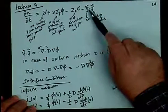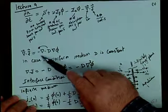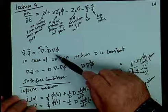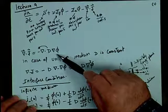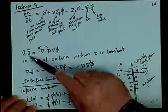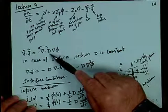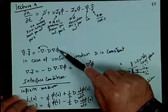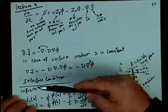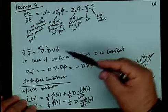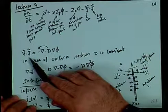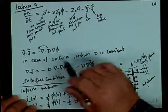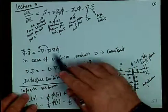Once we substitute with divergence J equal to negative divergence of D grad phi, in this case we will call it the diffusion equation. Why? Because J can be represented as negative D grad phi, which is Fick's law. And Fick's law describes diffusion. So we call it the diffusion equation when we assume that the current can be represented by Fick's law — a diffusion law.